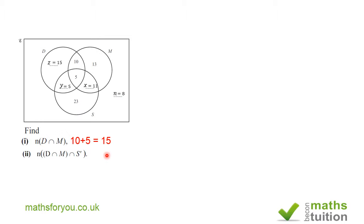Next: find the number of students in D intersection M intersection S prime (not S). Working from the inner bracket, D intersection M is this region here — that's 15. But it then says intersection not S, and this 5 here is in S, so we do not require this 5. The answer is 10.